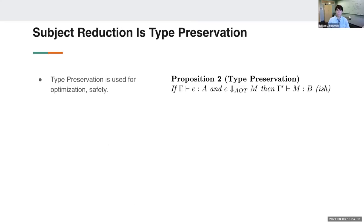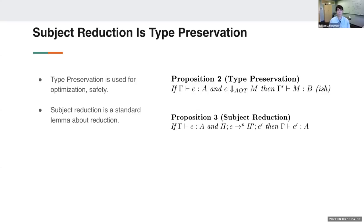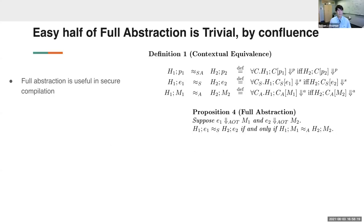The formal corollary: if source e with empty heap runs to a value, and we compile e to m, then m with an empty heap runs to the same value. The second interesting property is type preservation: if e has type A and we compile it, we get a well-typed term m, and the relation between source and target types falls directly out of a standard subject reduction lemma. If e is well-typed and takes a step in the multi-language, the result is still well-typed — no reasoning about the particulars of the ANF translation needed.